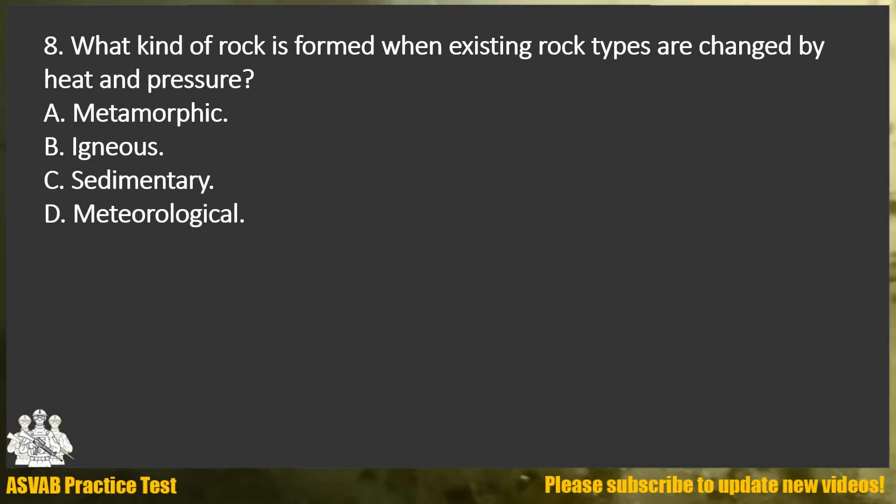Question 8. What kind of rock is formed when existing rock types are changed by heat and pressure? A. Metamorphic. B. Igneous. C. Sedimentary. D. Meteorological.